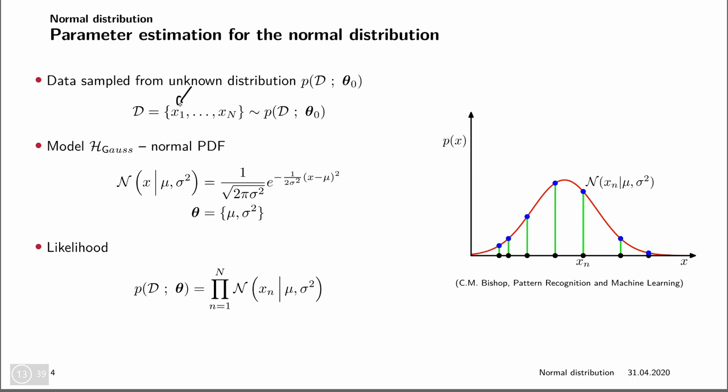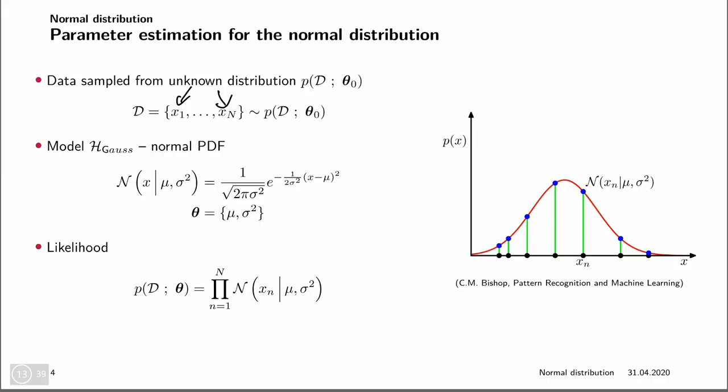We do not have just a single value but n of them, and we assume they are IID — independently and identically distributed. Once we make that assumption, we can write down their joint distribution. Because they are independent, this joint distribution factorizes, giving us the product from 1 through n of the individual densities. Each is normally distributed with the same mean mu and variance sigma squared. This joint probability over the data is what is called the likelihood.